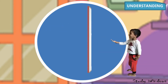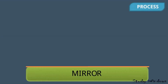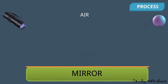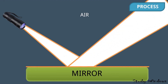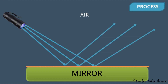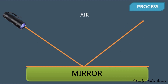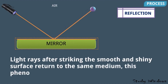Light is coming from the luminous object, falling on the object, then falling on the mirror, and coming to the eyes — we see the image in the mirror. Light rays bounce back from the mirror just like a ball, returning to the same medium, like air. We will take one single ray of light to understand this.